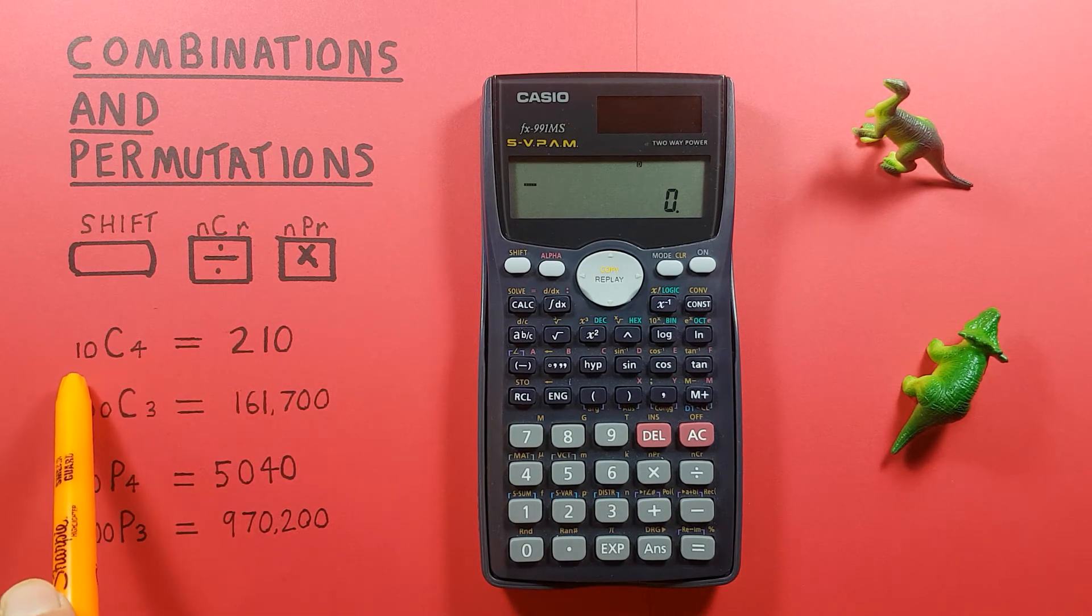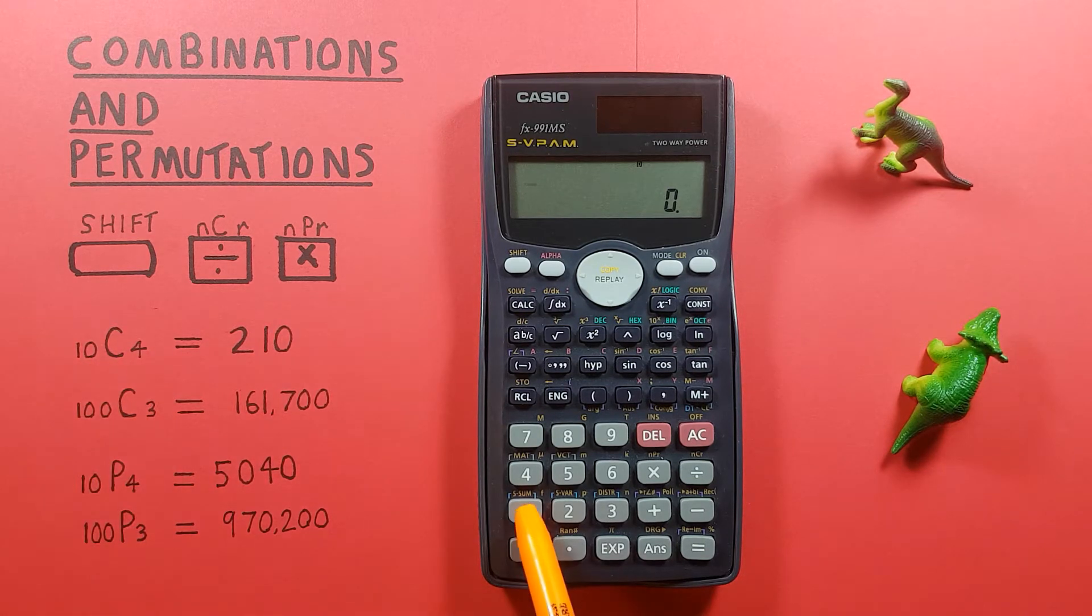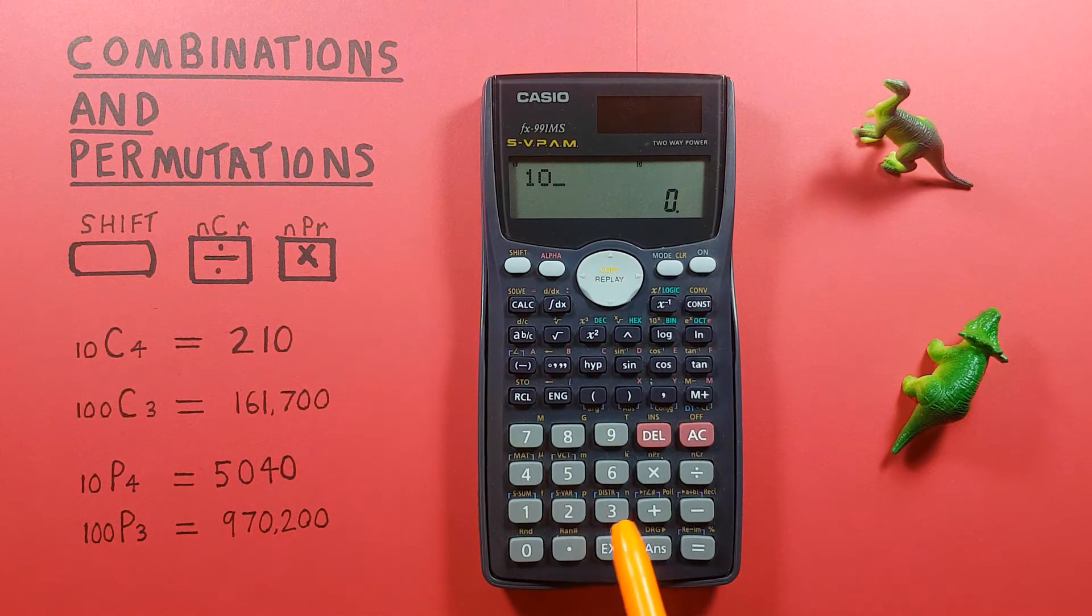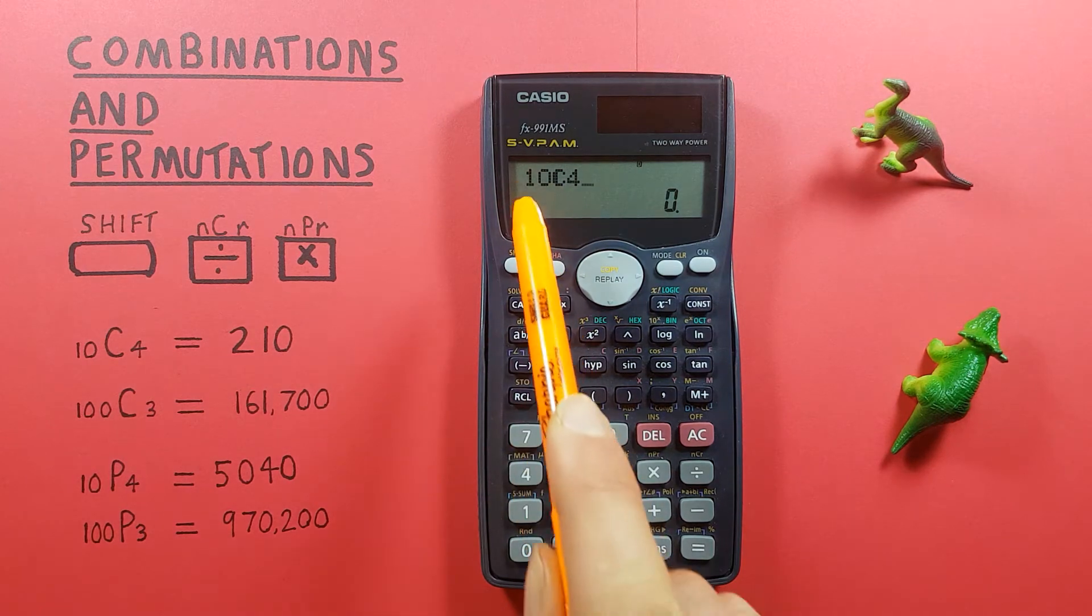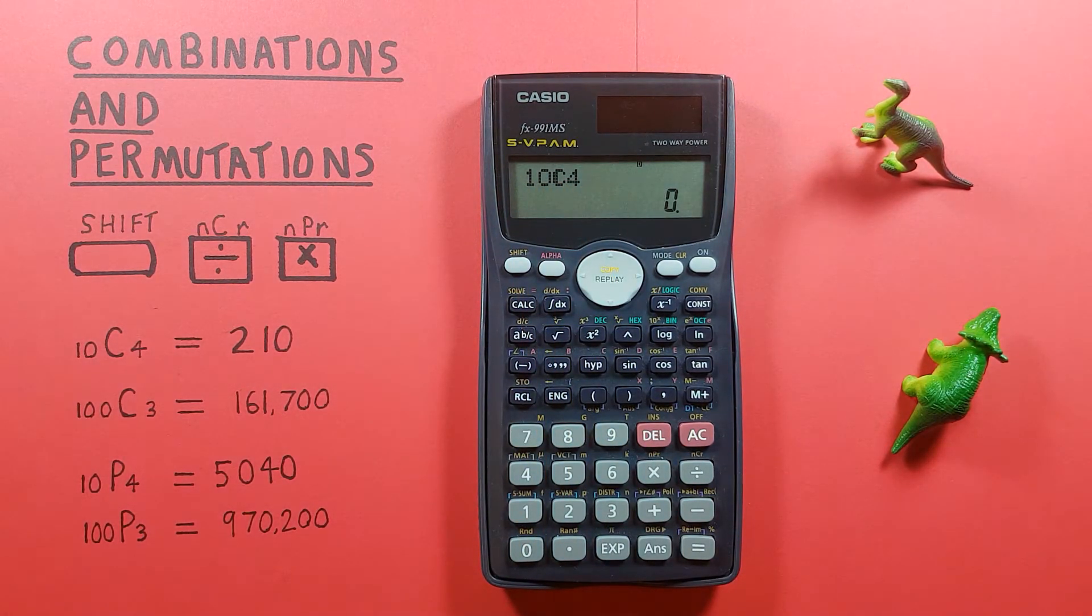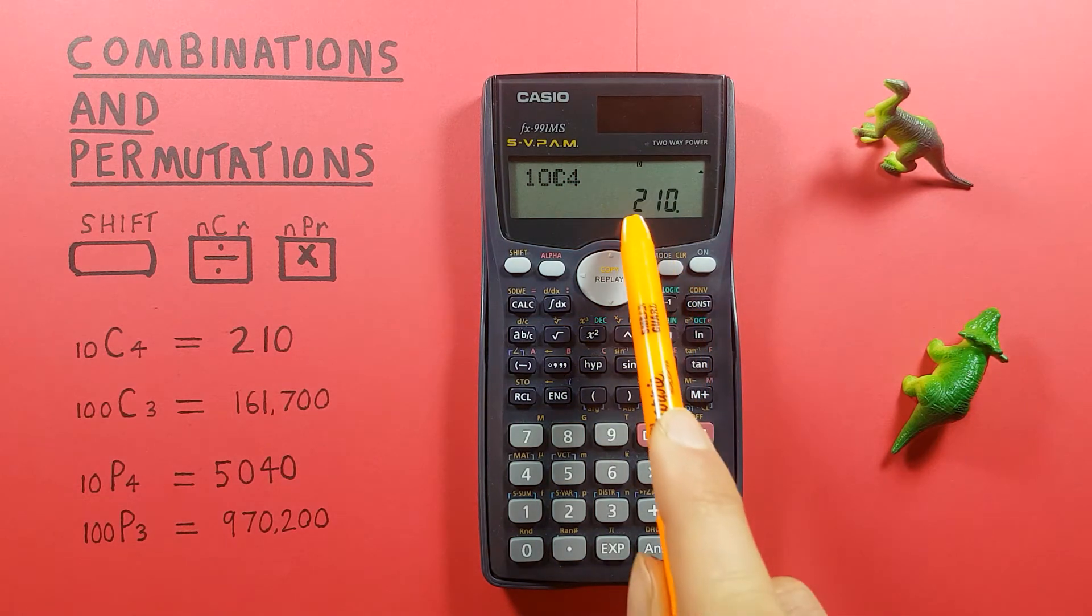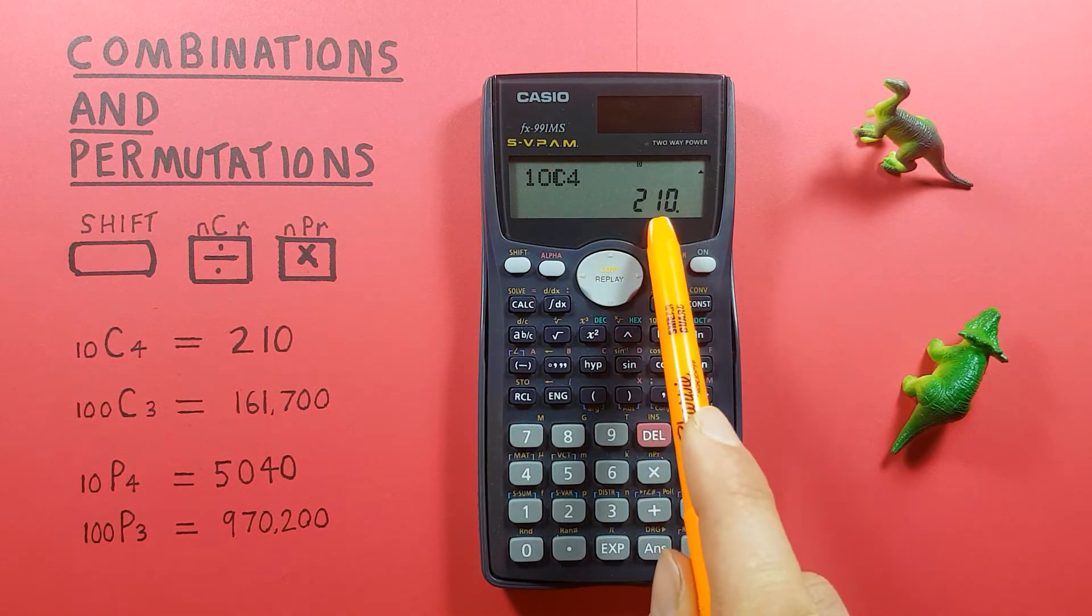So for example, if we want to choose four objects from ten for a combination, we start by entering the ten and then press shift division so that we see a C there, and then four. So we have ten choose four and press equals, and we see we get a result of 210, so we have 210 possible combinations there.